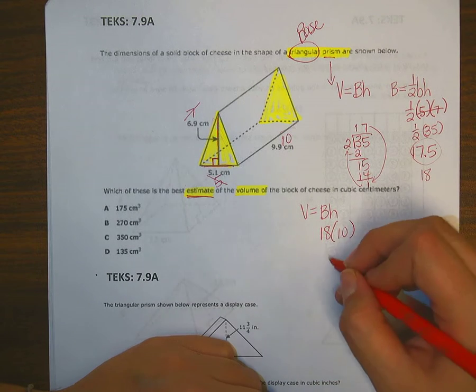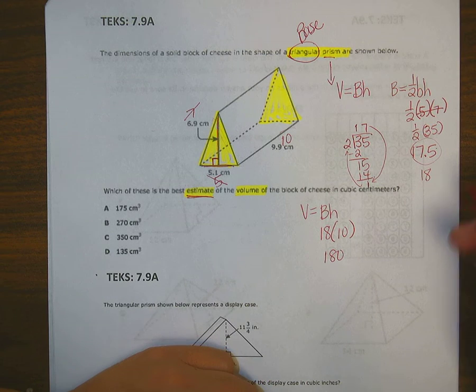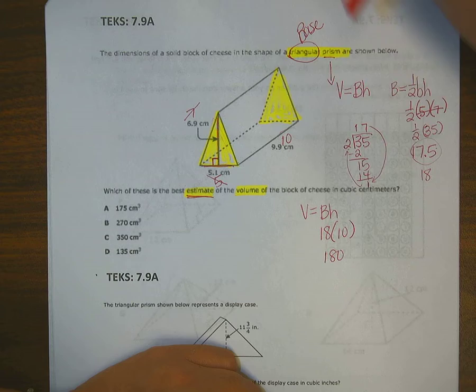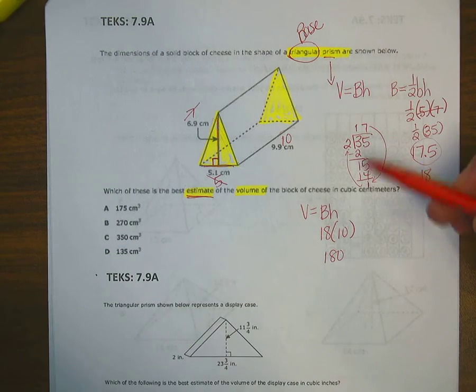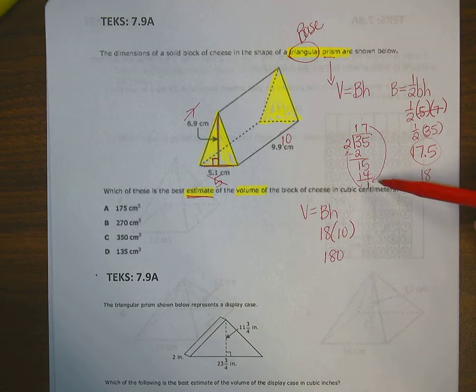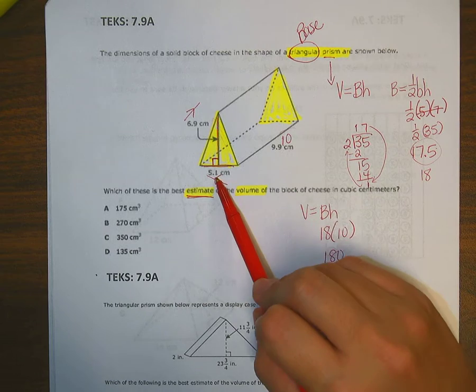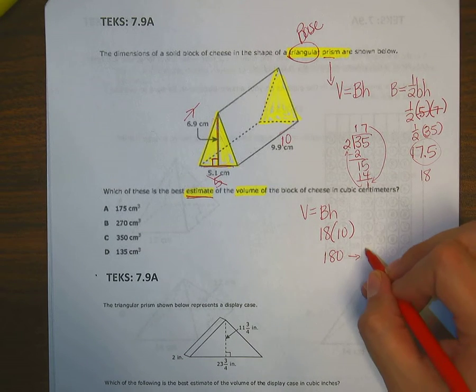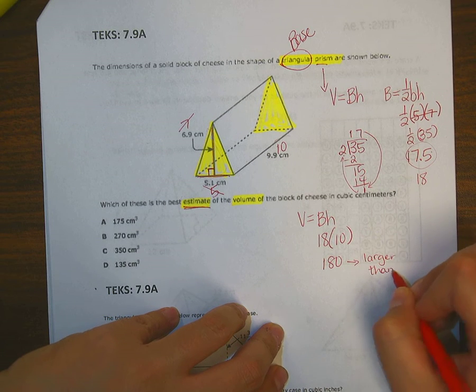18 times 10, 180. Now, is this my answer? Let's look at my choices. Keeping in mind, I did estimate and I bumped up some numbers. Like this one, I rounded up to 7. This one, I rounded down. So that might even it out. But this, I rounded up. So this is going to be a larger answer than the actual.